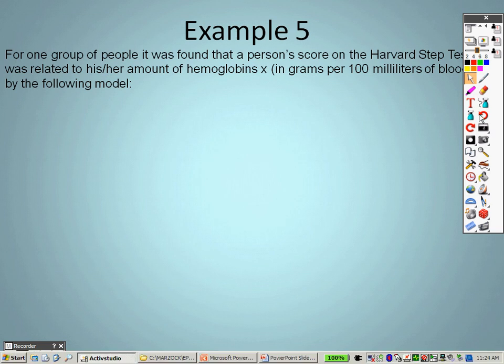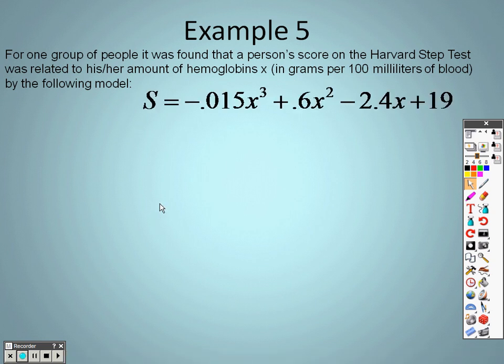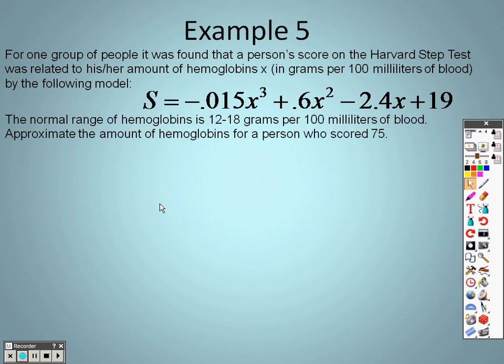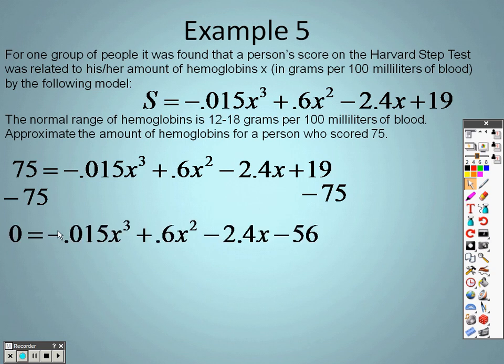Example five says, for one group of people, it was found that a person's score on the Harvard step test was related to his or her amount of hemoglobin x in grams per 100 milliliters of blood by the following model. Well, here it is. Here's our equation. The normal range of hemoglobins is 12 to 18 grams per 100 milliliters of blood. Approximate the amount of hemoglobins for a person whose score is 75. So we take that, make it a 75 because that's what the score is. I go and subtract to get everything on one side.